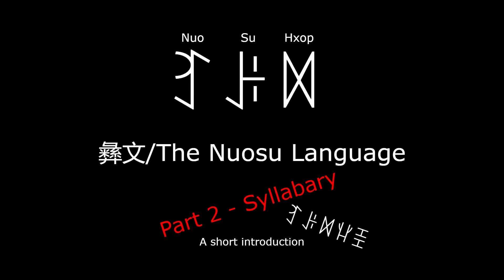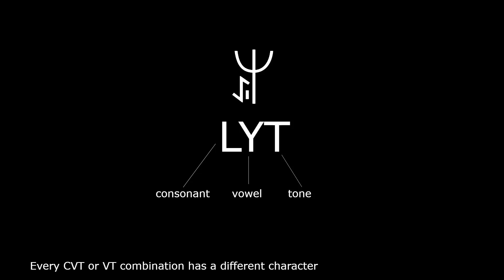Today's video will be going over the Norse syllabary in detail. The Norse syllabary comprises of about 800 distinct characters, each one representing a syllable of the language.